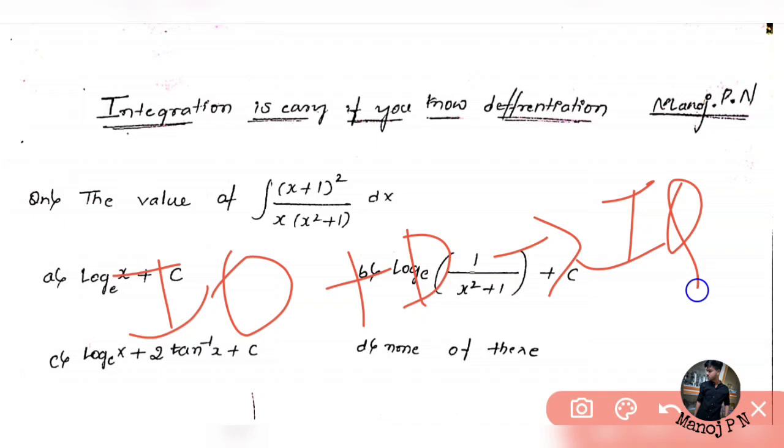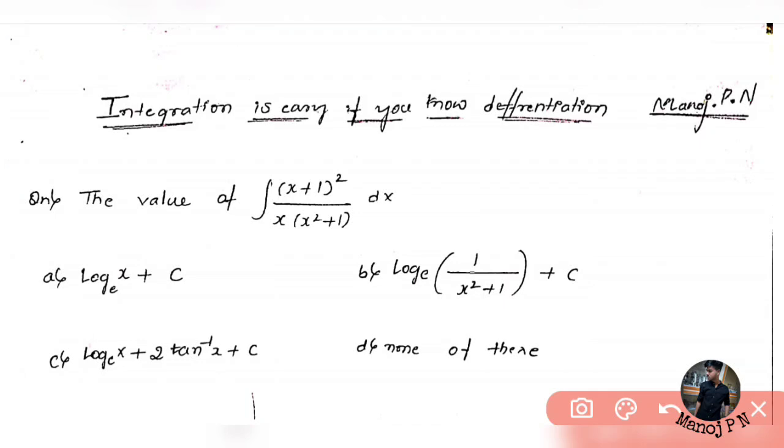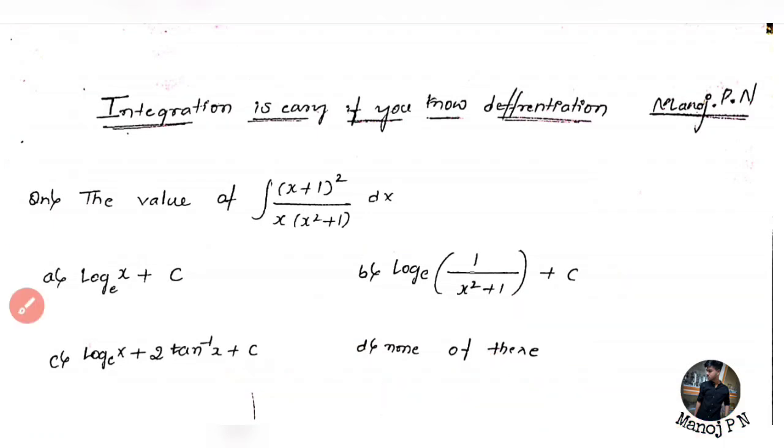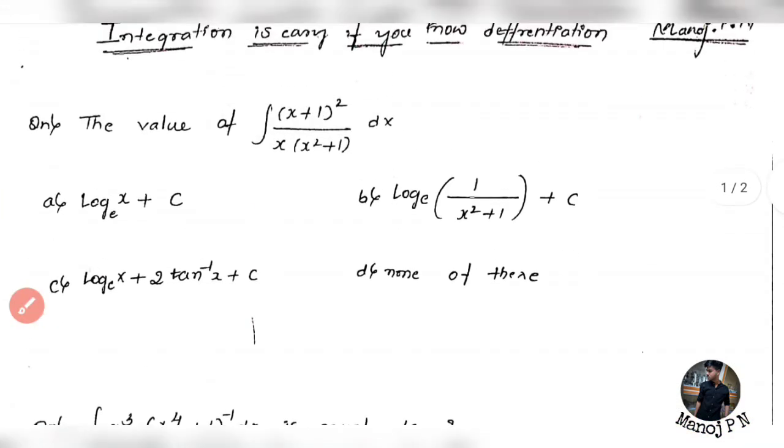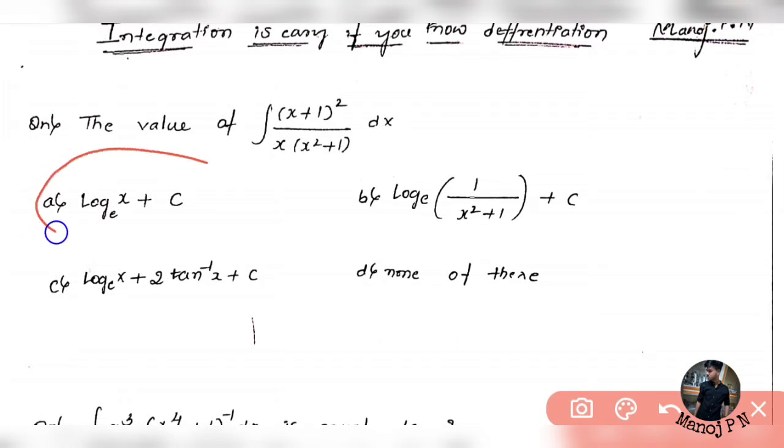That means, I have to do the integration output as a differentiation. The integration is the question. If you solve it, the trick will be more clear. So, integral (x+1)² divided by x(x²+1) dx. I have options here. The first option is log x + c. Second one, log(1/(x²+1)) + c. Log x + 2 tan inverse x + c, and none of this.